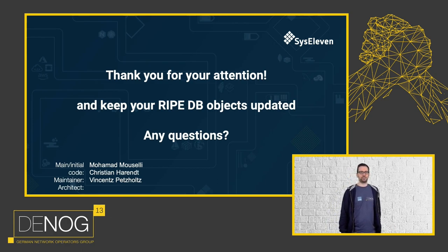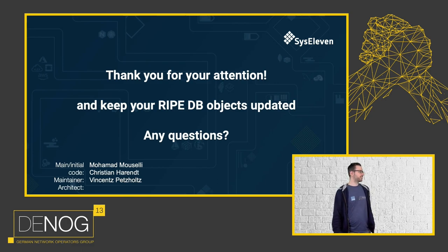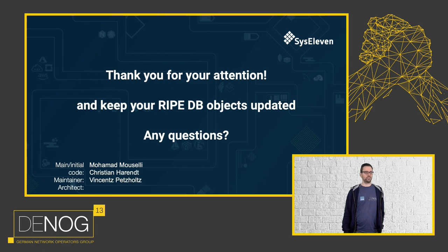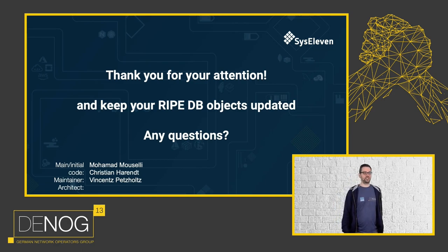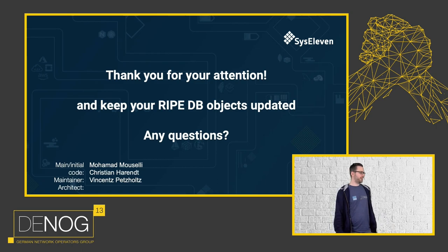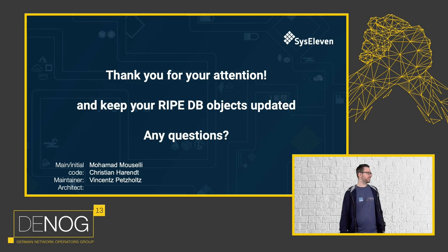A second question: does it only update inetnum and inet6num objects, or any other objects? Currently only inetnum and inet6num objects are supported, but maybe we can add more object types in the future. And the last question: is there support for other databases like ARIN or is it only for RIPE? At the current state it's only for RIPE, but that's something we'll have to consider in the future. Thank you very much, and thank you for open sourcing it — hopefully our audience will keep track of the repository and use it next quarter.